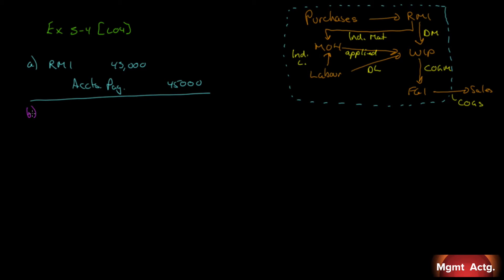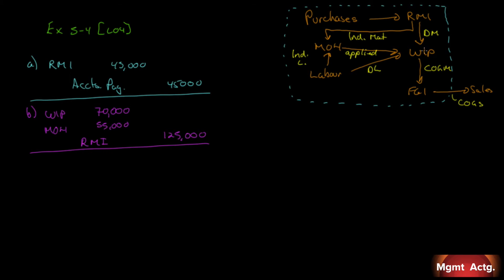Transaction B: $125,000 in raw materials was requisitioned for use in production. Of this, $70,000 was for direct materials and the remainder for indirect. Direct materials go into work in process — debit work in process $70,000. The remaining $55,000 is indirect, so it goes into manufacturing overhead — debit manufacturing overhead $55,000. Since materials are leaving raw materials, we credit raw materials inventory $125,000.